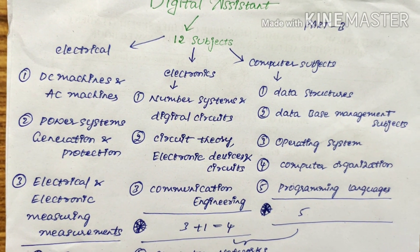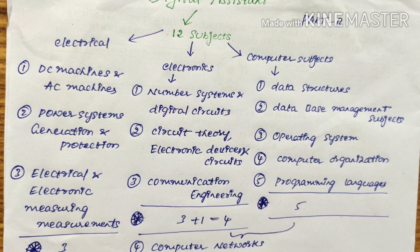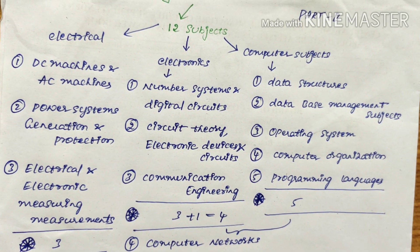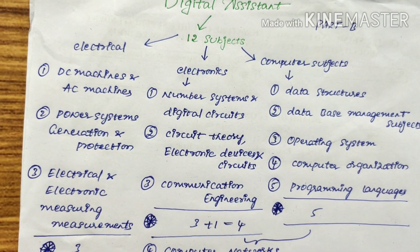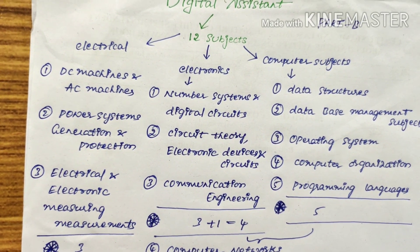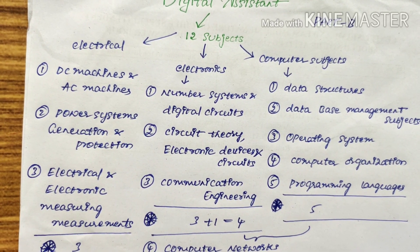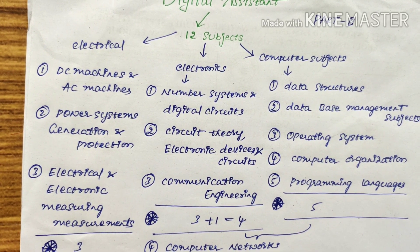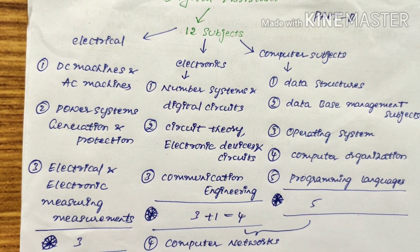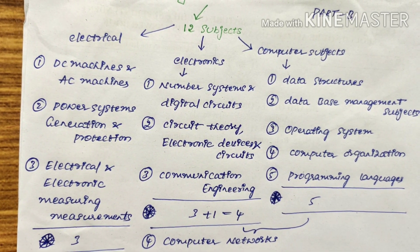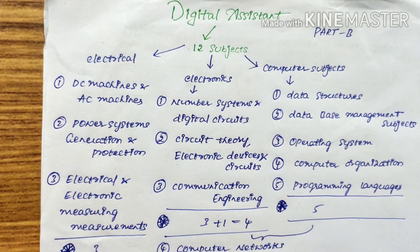Coming to electronics subjects: among the four subjects, Number Systems and Digital Circuits is the easiest because the syllabus is quite less compared to the others. Circuit Theory and Electronic Devices and Circuits is a very deep and huge topic. So first concentrate on Number Systems, then go to Computer Networking — which is also very large but from which you can score marks quite easily. Communication Engineering is also there.